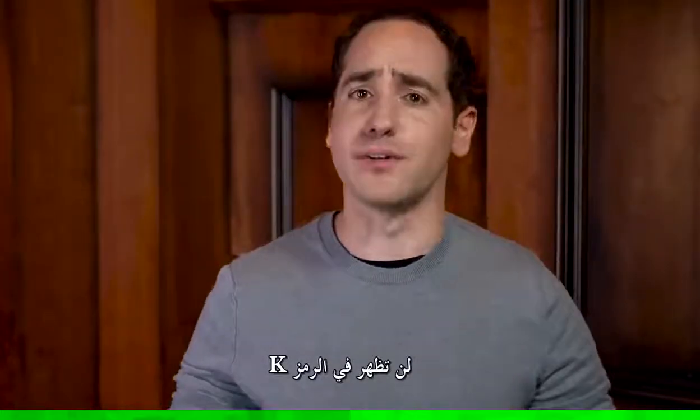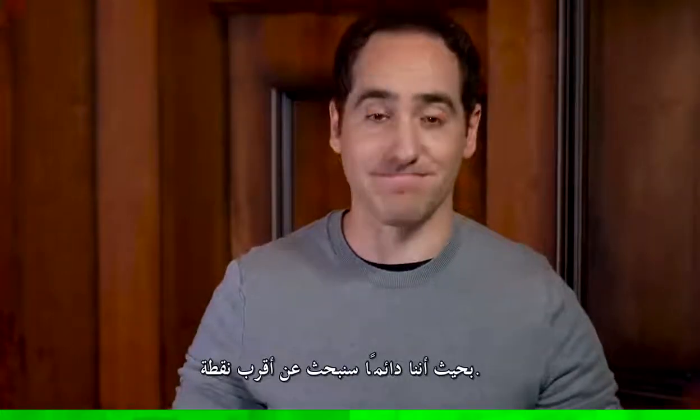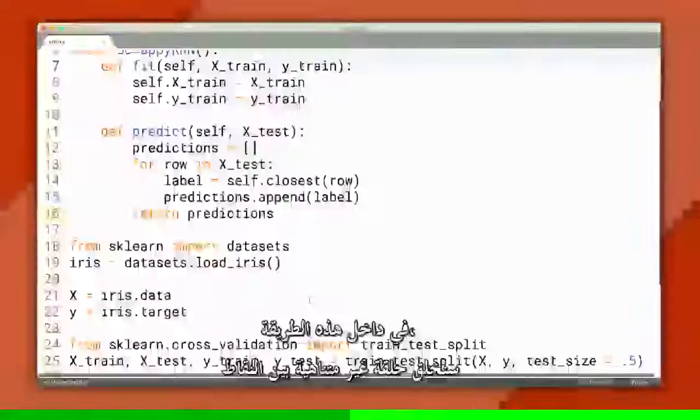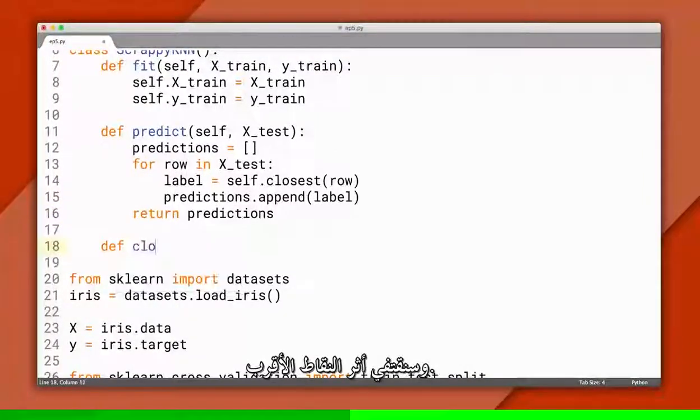The k variable won't appear in our code, since we'll always just find the closest point. Inside this method, we'll loop over all the training points and keep track of the closest one so far.